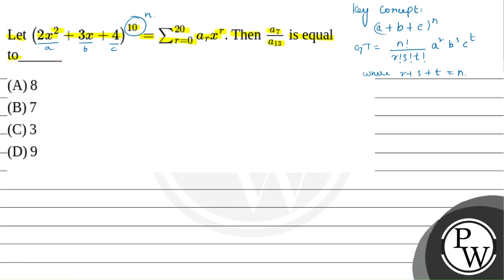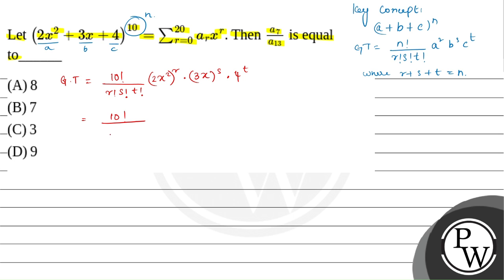So the general term equals 10! divided by r! s! t! into (2x²)^r into (3x)^s into 4^t. If we simplify this we will have 10! divided by r! s! t! times 2^r times 3^s times 4^t into x^(2r+s).